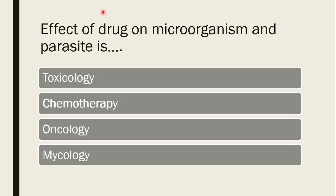Next question: the effect of a drug on microorganisms and parasites — is it toxicology, chemotherapy, oncology, or mycology? The correct answer is chemotherapy. Chemotherapy includes all antibiotics which have a pronounced effect on the microorganism or parasite responsible for disease production.